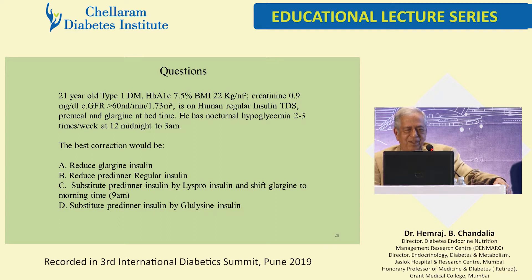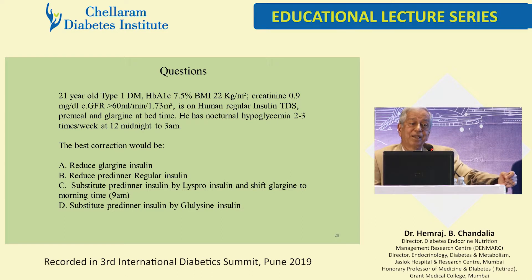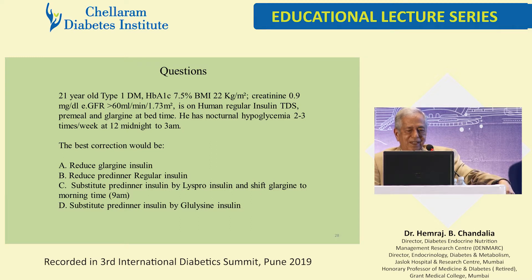Nugget 1: A 21-year-old type 1 diabetic, A1c 7.5, BMI 22, creatinine 0.9, on human regular insulin three times a day pre-meal and glargine at bedtime — classical basal-bolus. Problem: nocturnal hypoglycemia 2 to 3 times per week. Nocturnal hypo is the most unpleasant — at an ungodly hour, help is not available, and counter-regulatory mechanisms are not working properly in the reclining position at night, so patients go into bad hypoglycemic episodes. Options: reduce glargine, reduce pre-dinner regular, substitute pre-dinner regular with lispro and shift glargine to morning, or substitute with glulisine.